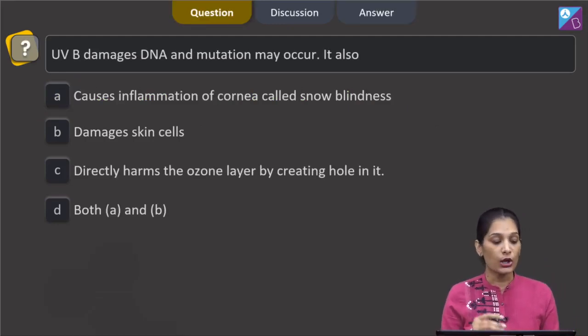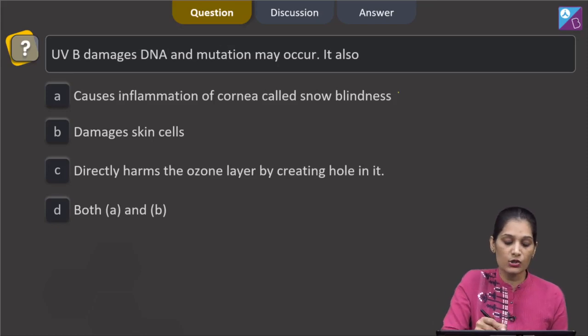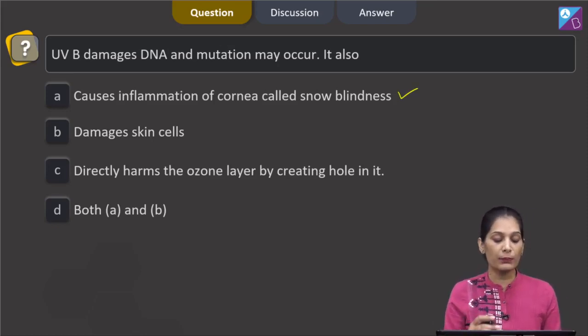This question says UVB or ultraviolet B damages DNA and mutation may occur. It also, A: causes inflammation of cornea called snow blindness. This is true that UVB can cause the inflammation of cornea and this is called the snow blindness. UVB can also damage the skin cells.